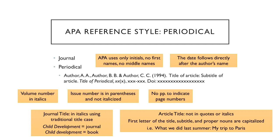How do you cite a periodical or a journal in APA format? You cite using the author's last name, comma, abbreviation for their first name and middle name if given. If there's more than one author, you do the same — last name, comma, abbreviated first and middle name. APA only uses initials for first and middle names, always. After the authors, you list the year, then the title of the article, including any subtitle. The article title is not in quotes or italics; only the first letter of the title, subtitle, and proper nouns are capitalized.